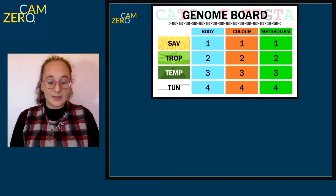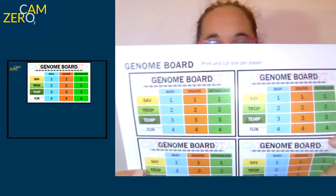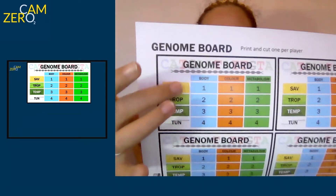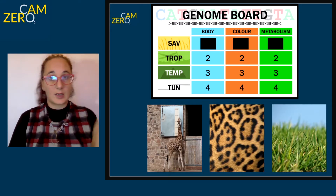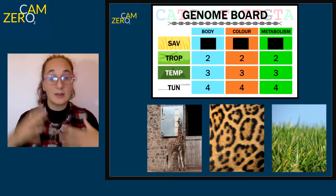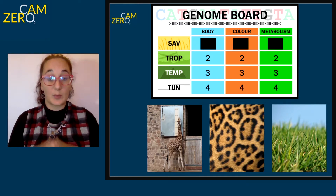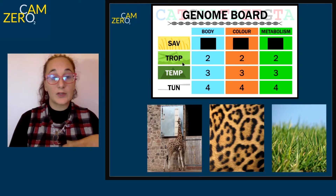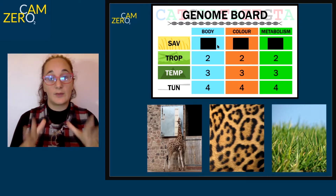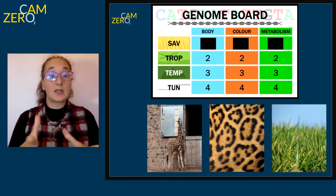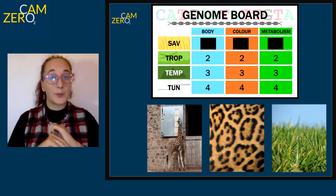This is shown in the game through the genome board. On the genome board we can see the four habitats and three different genes. Those three genes code for the three characteristics we discussed: body size, fur color and type, and metabolism. When you start in the savannah, your DNA is already in the gene variant associated with that habitat — you are adapted to it, you're happy there and perfectly suited.